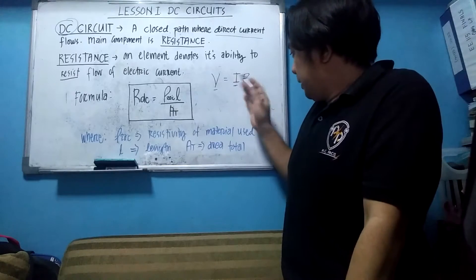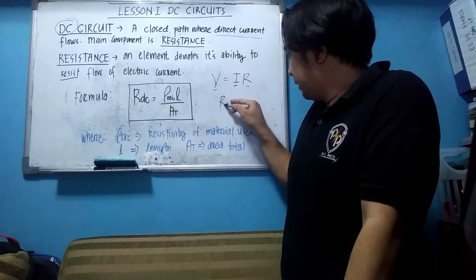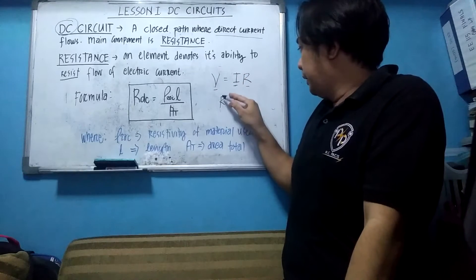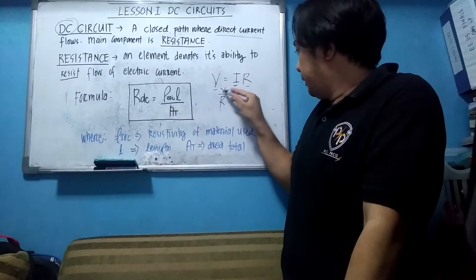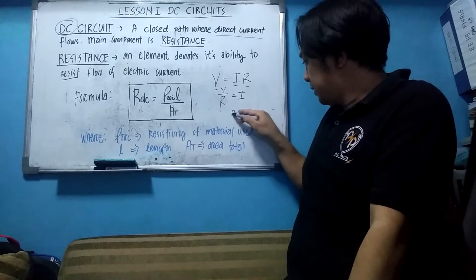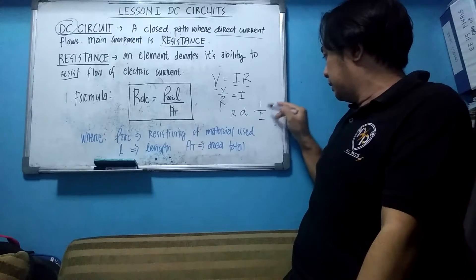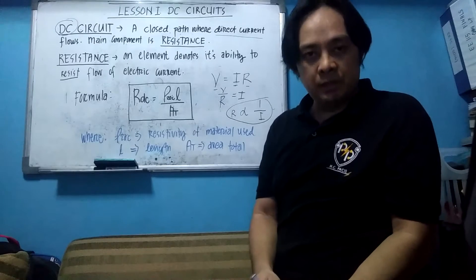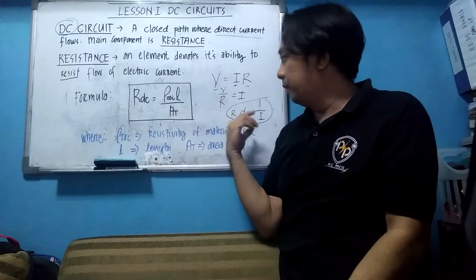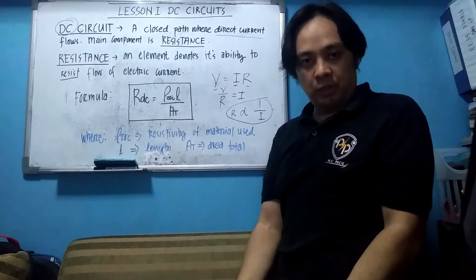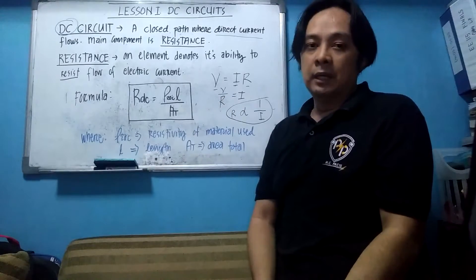As you can see here that the R, if we interchange the equation here, so it will become like this. And it's pretty clear that the resistance is inversely proportional to the current. Which means, if you have a higher resistance, you will have a lower current because resistance is the direct opposition of the current.